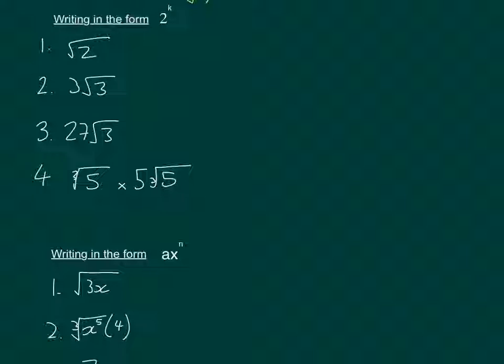First one, we've got root 2, so root 2 is just 2 to the power of a half. Here we've got 3 root 3, so that's 3 to the power of 1 times 3 to the power of a half, which is going to be 3 to the power of 1 and a half.